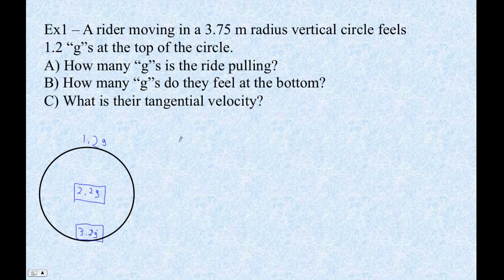So how many is it really pulling? Well, it's really pulling 2.2 g's. And at the bottom, you'd feel 3.2 g's. And then what is their tangential velocity? Well, use what the ride is actually doing. So 2.2 g's. And we've got to turn this into meters per second squared. So 2.2 times 9.81, it's 21.582 meters per second squared. Now we've converted g's to meters per second squared, and then we want their tangential velocity. Well, if a is v squared over r, then v is the square root of ar.